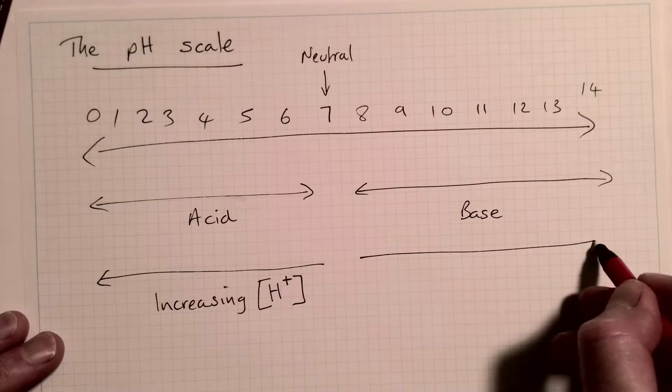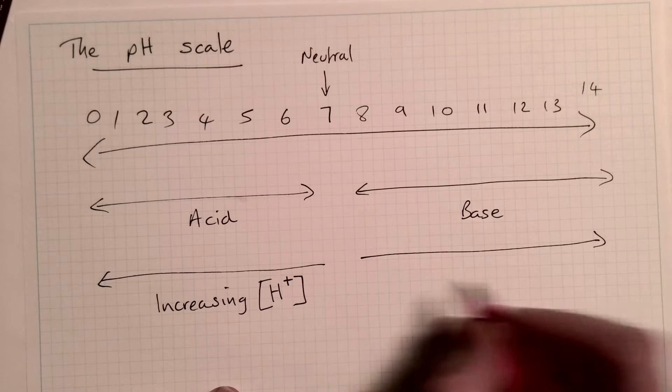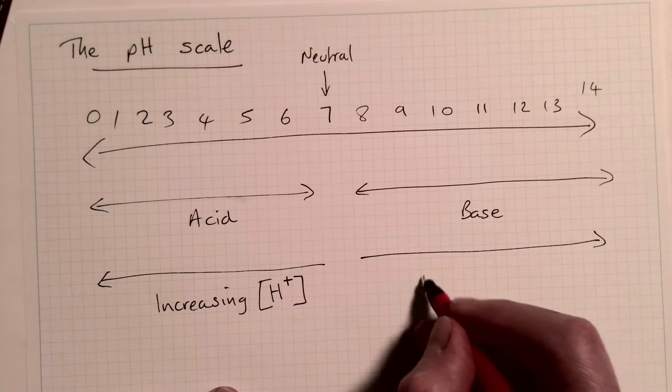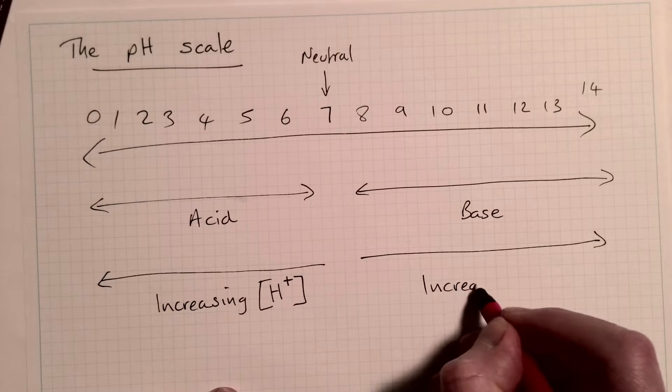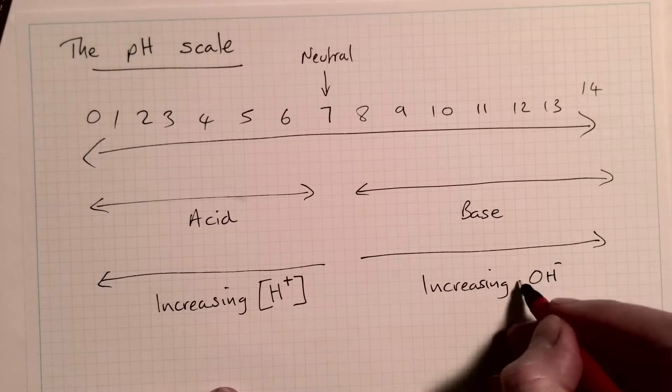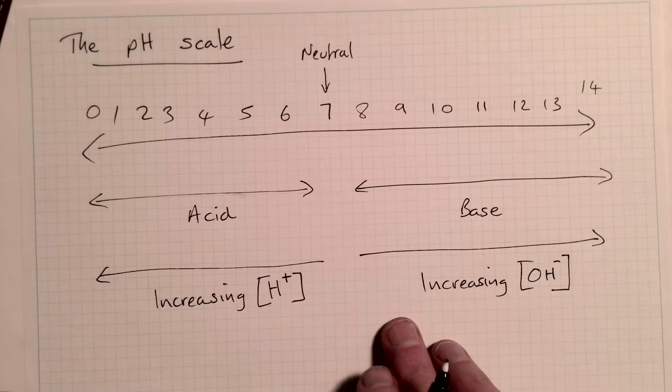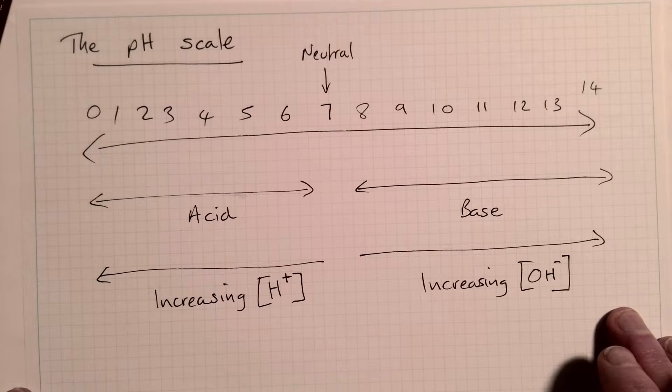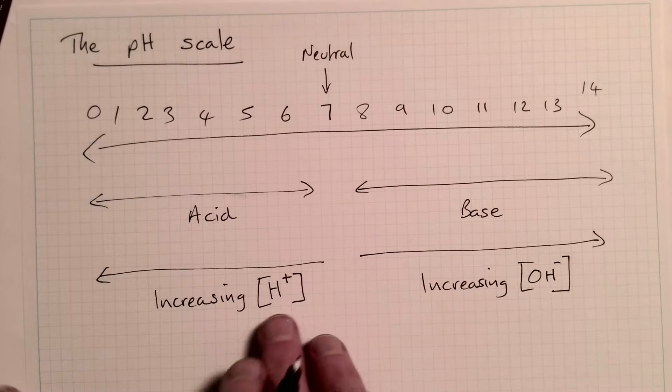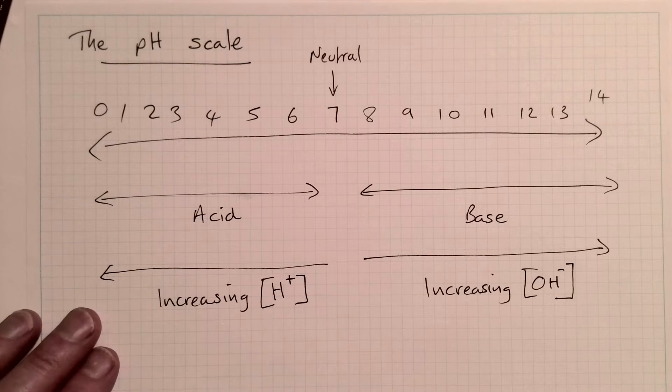In this direction, remember that a base is made of hydroxide ions. And what this means is as we get towards 14, we get increasing OH minus concentration. So as the hydroxide concentration increases, we get closer to 14. As the hydrogen ion concentration increases, we get closer to zero.